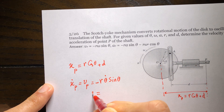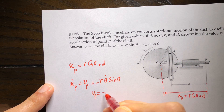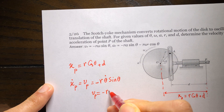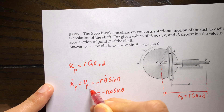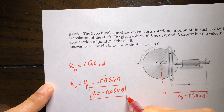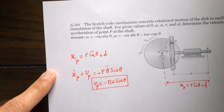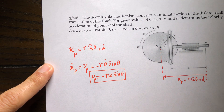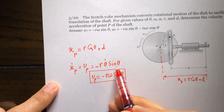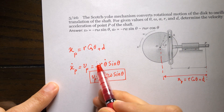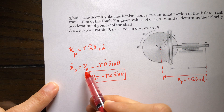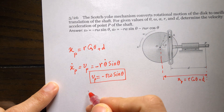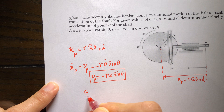So the velocity of P is equal to negative R times omega times sine of theta. To find the acceleration of P, we can take another derivative of this — the derivative of velocity is acceleration.